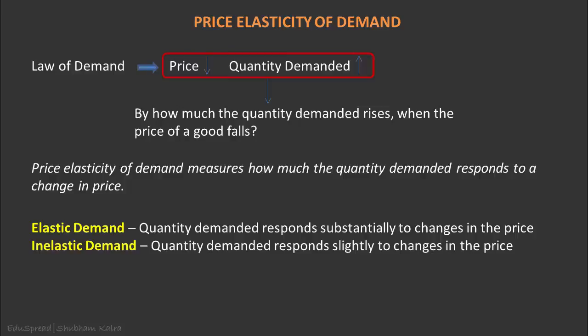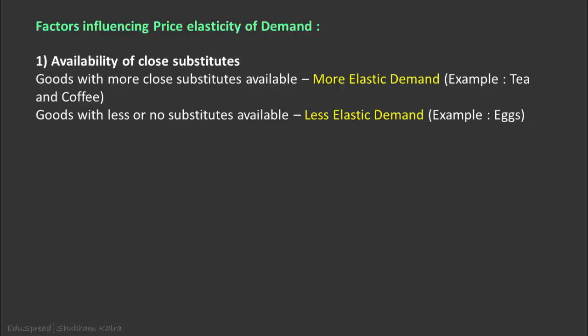But what determines the price elasticity of demand? How can we know how consumers will respond to an increase in the price of, say, oranges? If we know the demand curve for oranges, we can use mathematical formulas to get a specific value for price elasticity of demand. But it is not always feasible to have knowledge of the demand curve, so it is helpful to have some general rules of thumb about what influences price elasticity of demand.